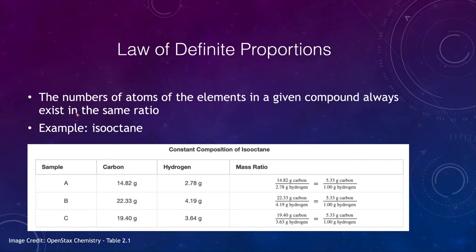Now, one of the things we want to look at as well is what we call the law of definite proportions. And this states that the number of atoms of the elements in a given compound always exist in the same ratio. So if we are looking at a specific compound, in this case, what is called isoctane. And this is composed of carbon and hydrogen. So if we want to check if these are the same compound, well, we look,